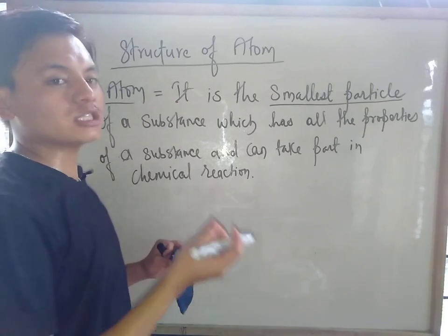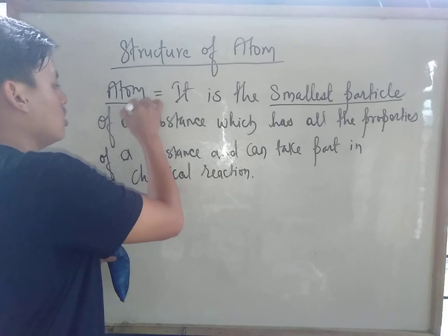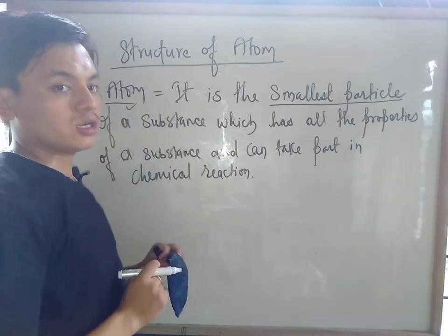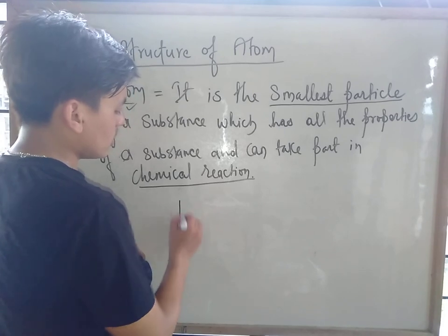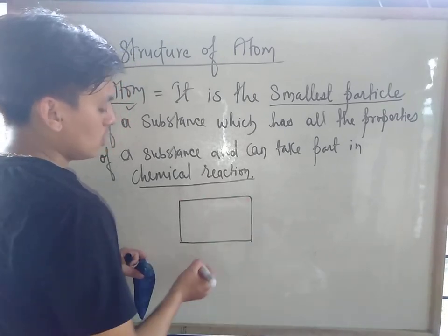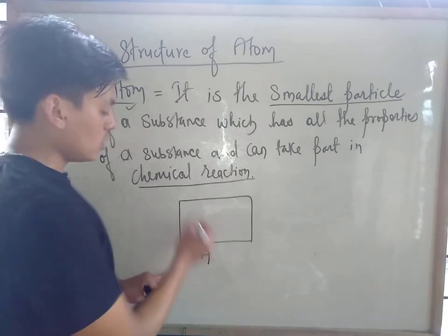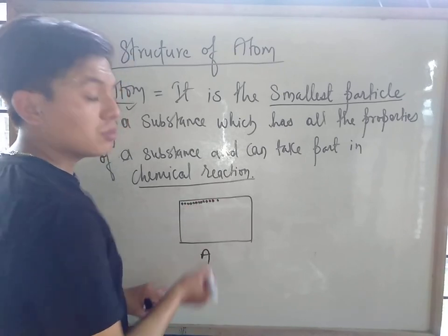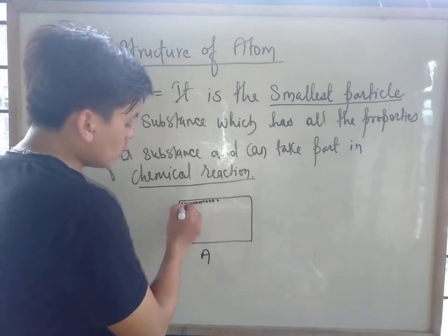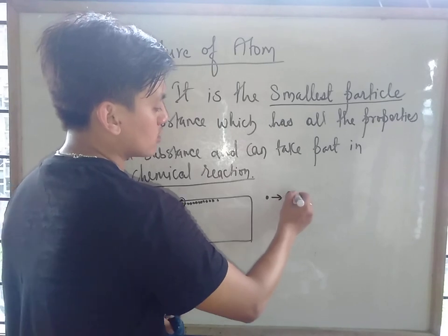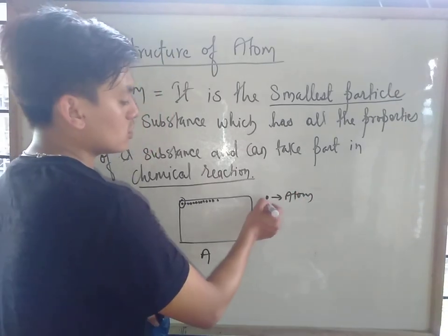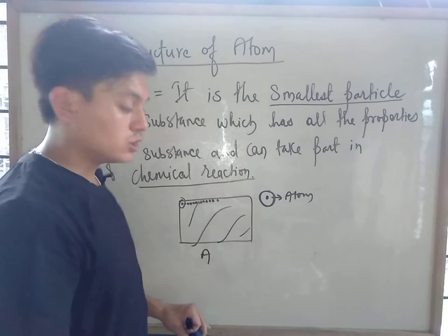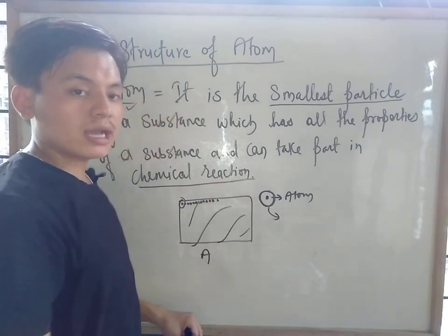This is the maximum possible smallest size. You can't get anything smaller than an atom. And the atom still carries all the properties of the substance it came from. For example, suppose you have a substance — you can divide it down into atoms. There will be millions and millions of atoms, but that atom will still have all the properties of the substance and can take part in a chemical reaction.